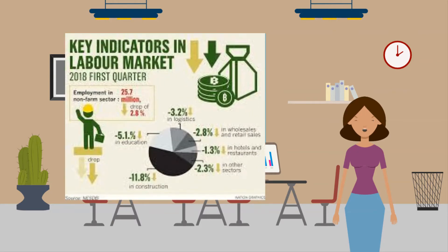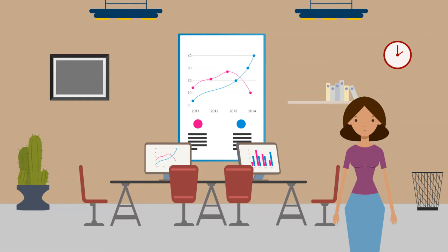The employment structure of a country shows how the labor force is divided between the primary, secondary, and tertiary sectors. Different countries have different employment structures. The employment structure of a given country can tell you quite a lot about its economy. In the richest countries, there will usually be more people working in the tertiary or quaternary sector than in the primary and secondary sectors. In the poorest countries, there tend to be more people working in the primary sector than in either the secondary or tertiary sectors.